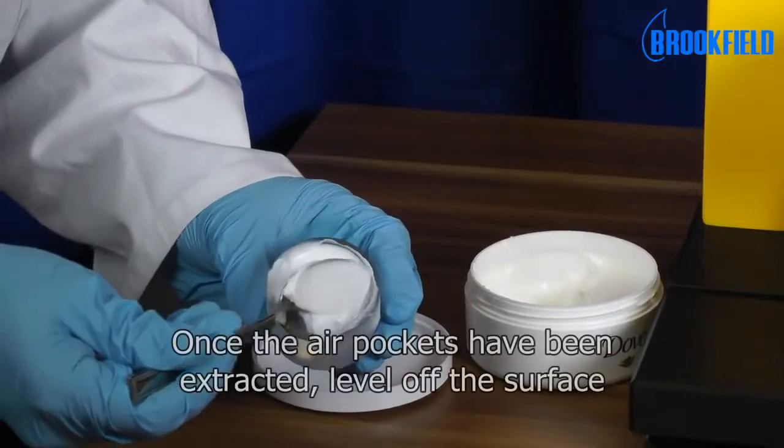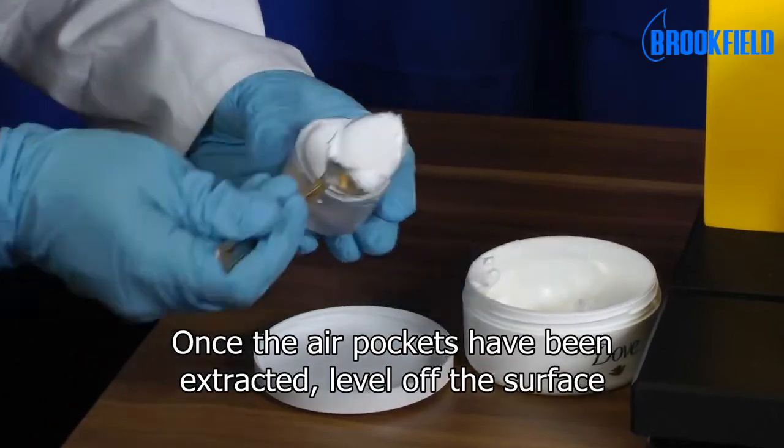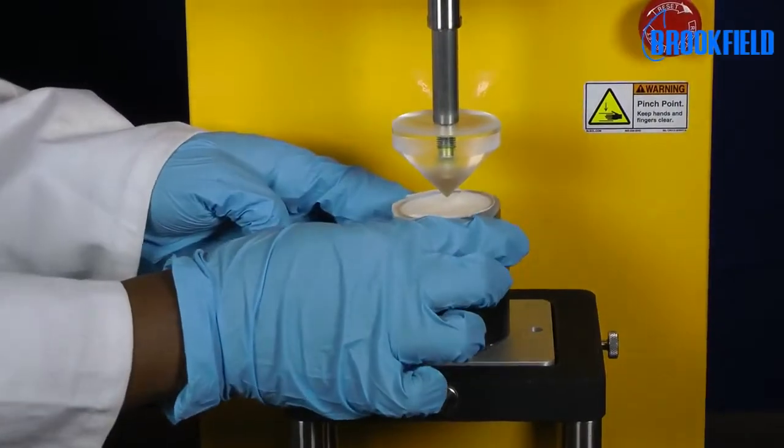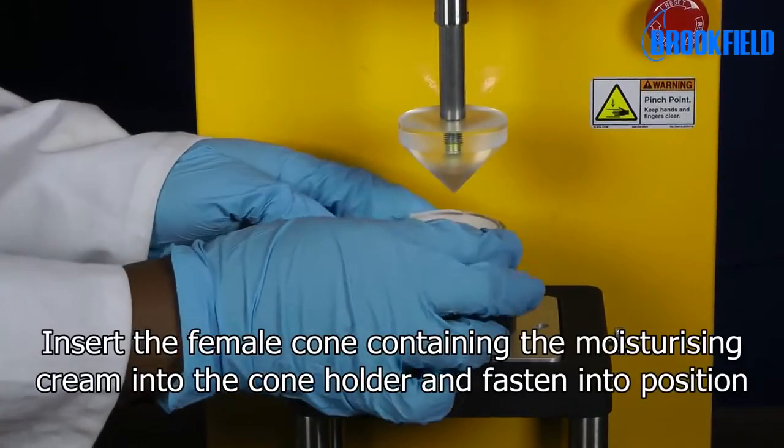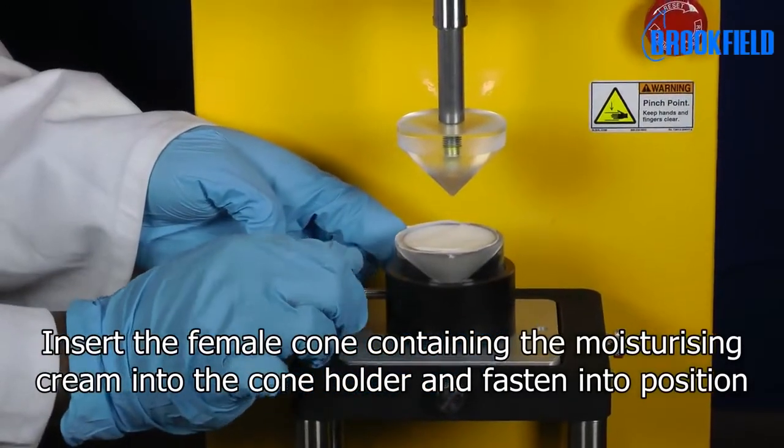Once the air pockets have been extracted, level off the surface. Insert the female cone containing the moisturizing cream into the cone holder and fasten into position.